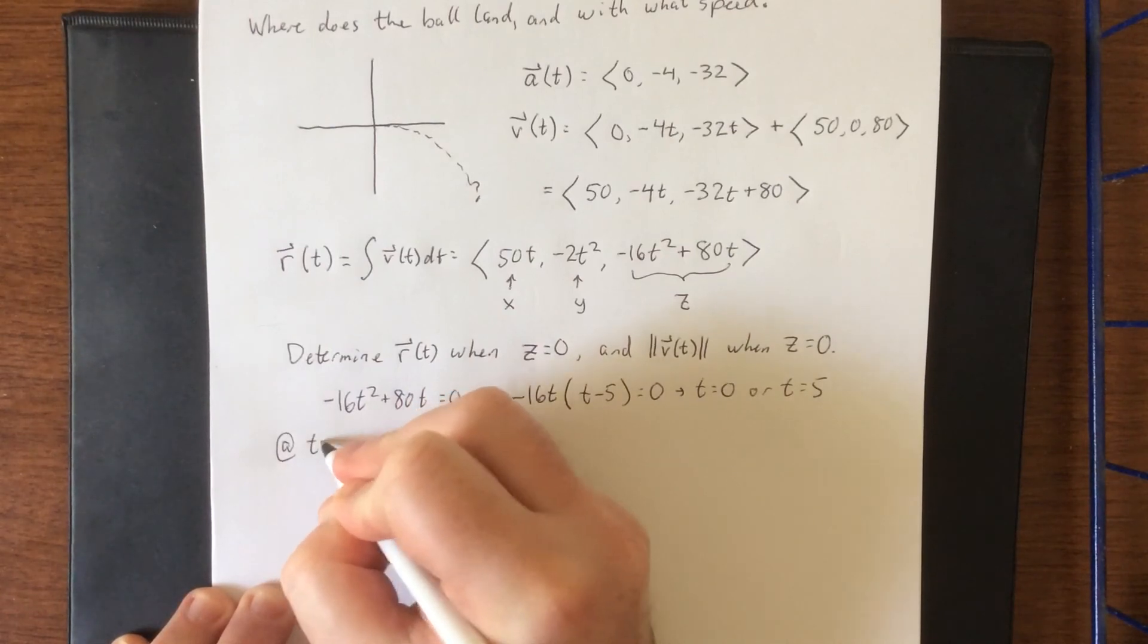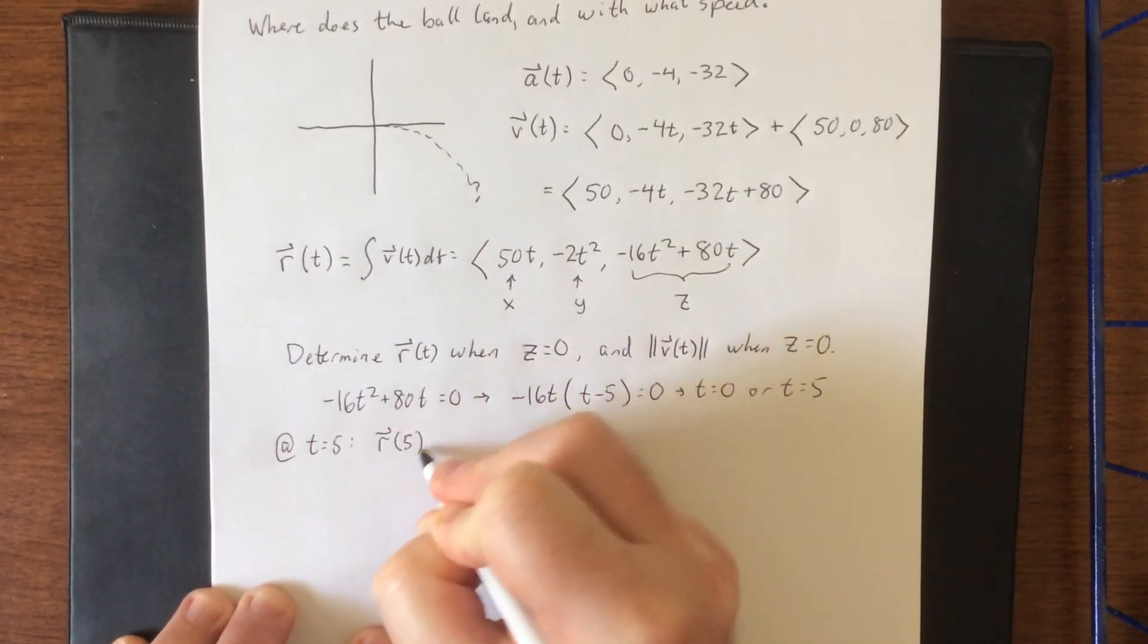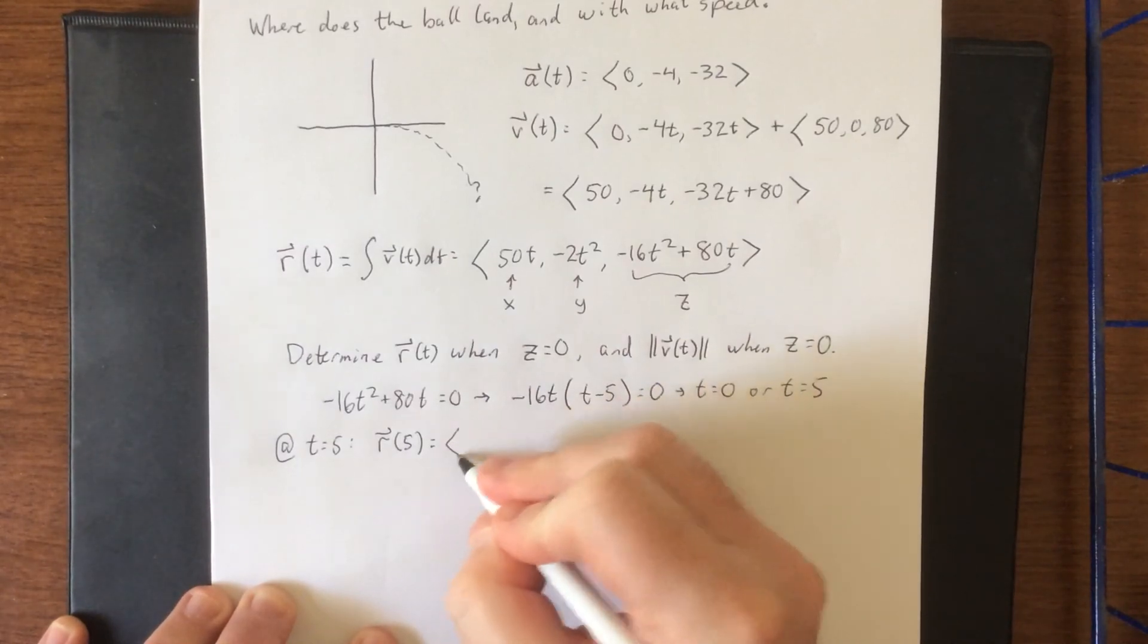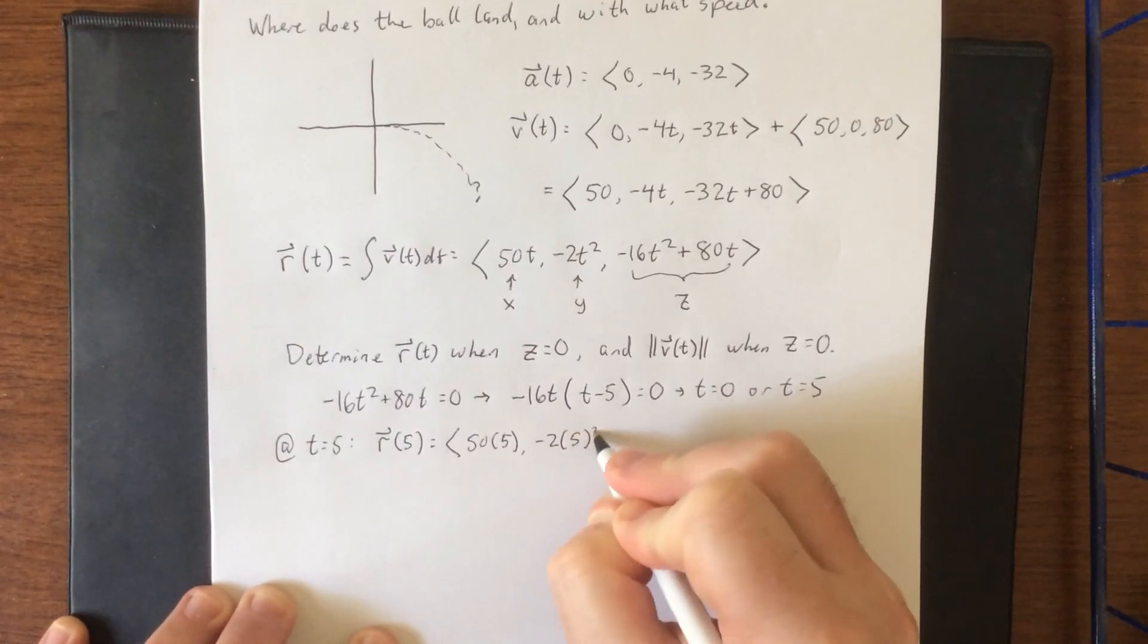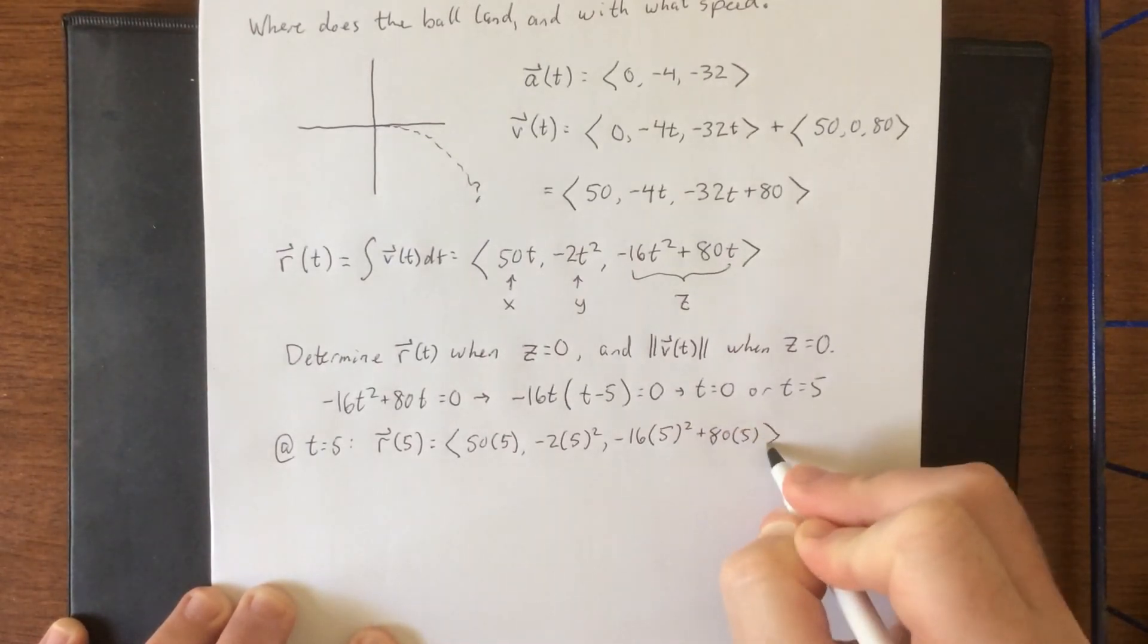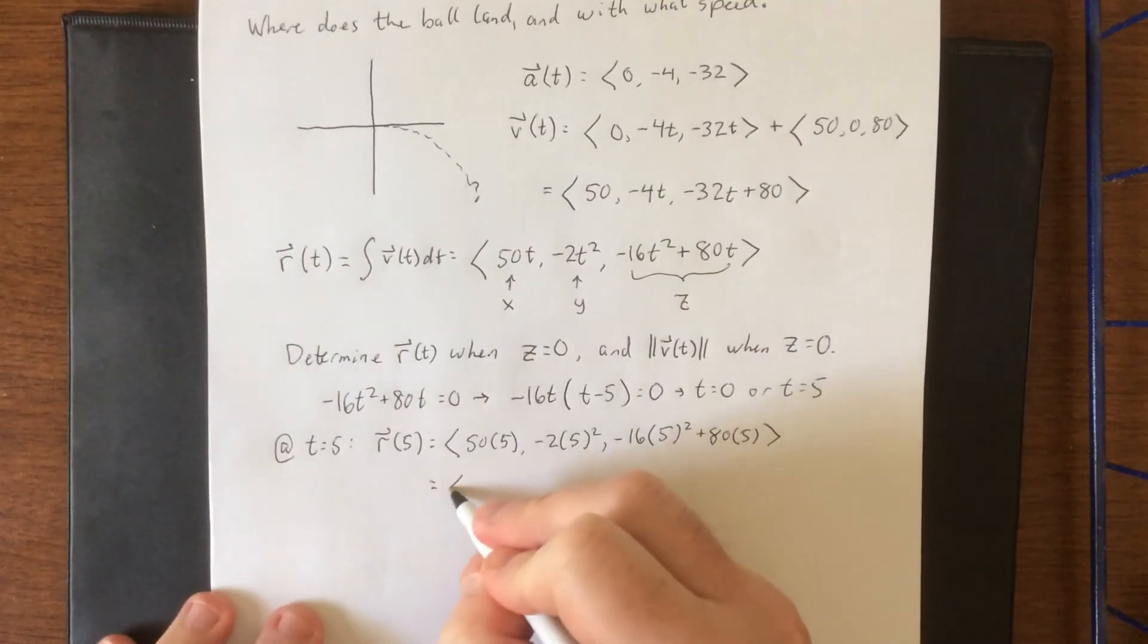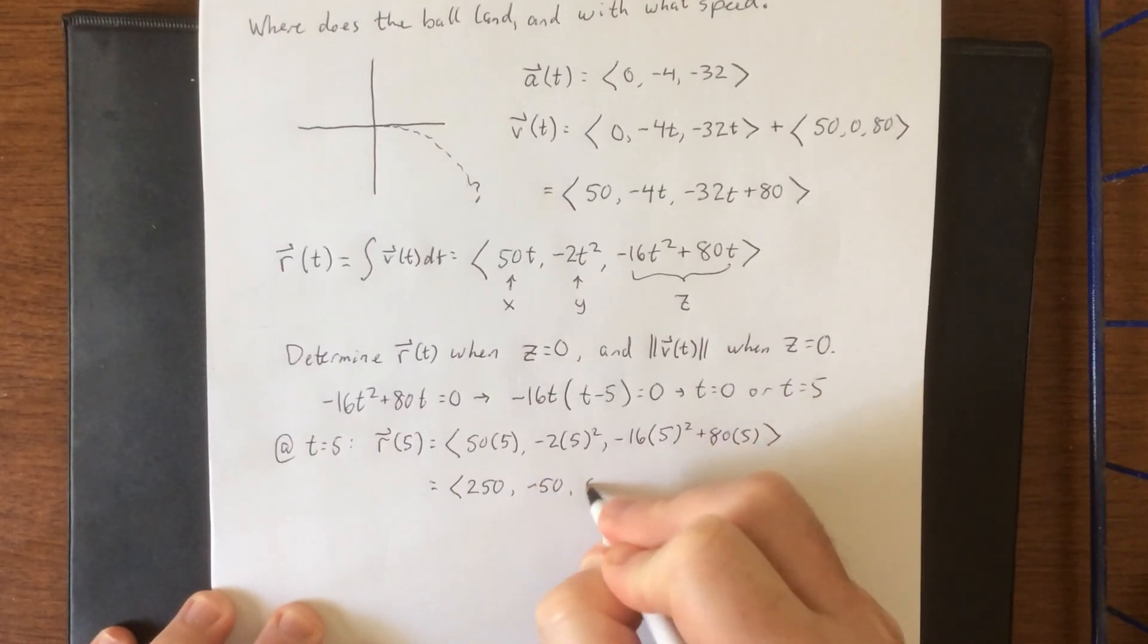So at t equals five let's calculate r(5). So I'm going to go back to my r(t) and plug in t equals five. So this will be 50 times 5, -2 times 5², and then well technically we already know what this is going to be equal to because we just set this equal to zero. So with that in mind this will be <250, -50, 0>.